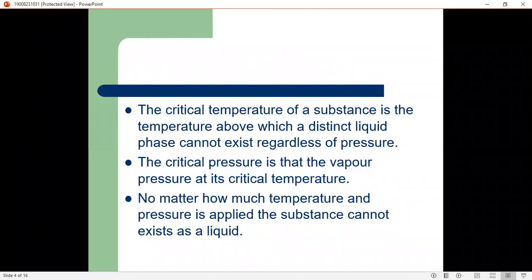The critical temperature of a substance is the temperature above which a distinct liquid phase cannot exist regardless of pressure. The critical pressure is the vapor pressure at its critical temperature. No matter how much temperature and pressure is applied, the substance cannot exist as a liquid.